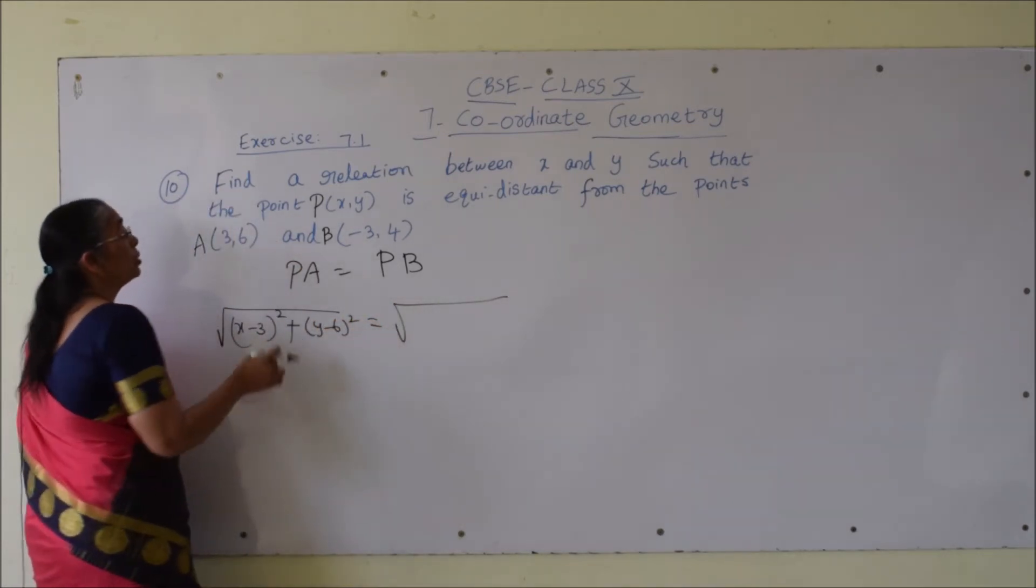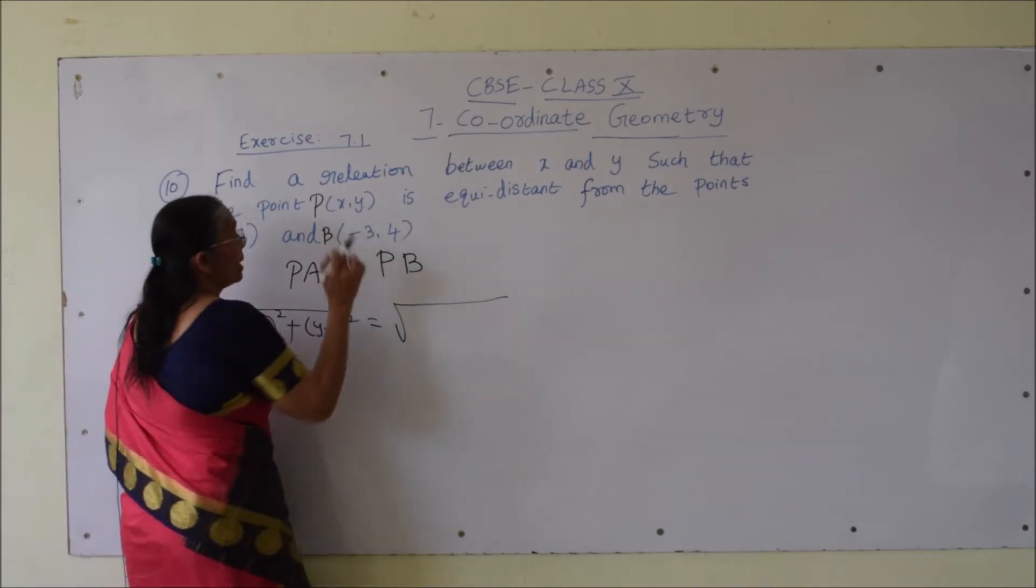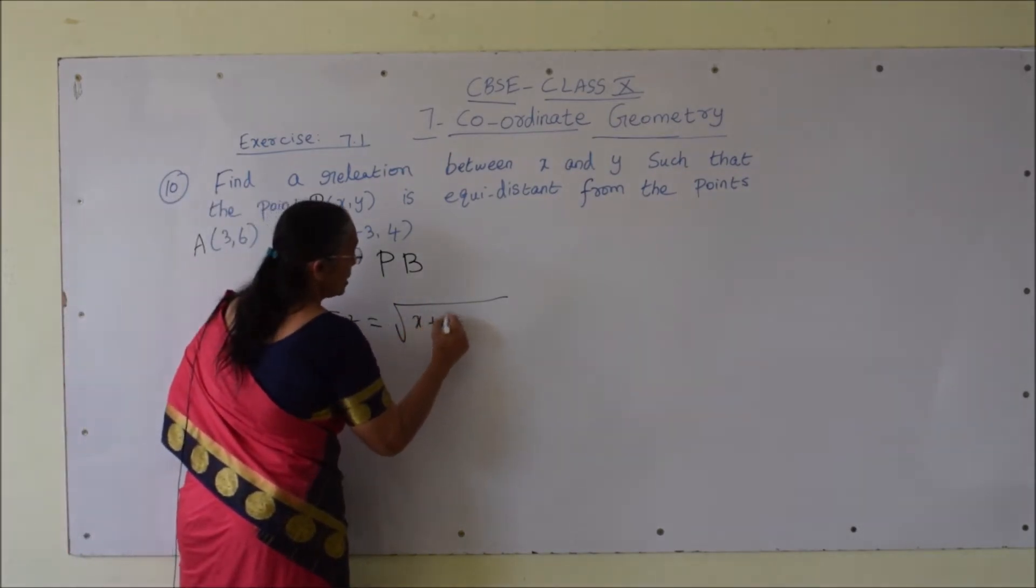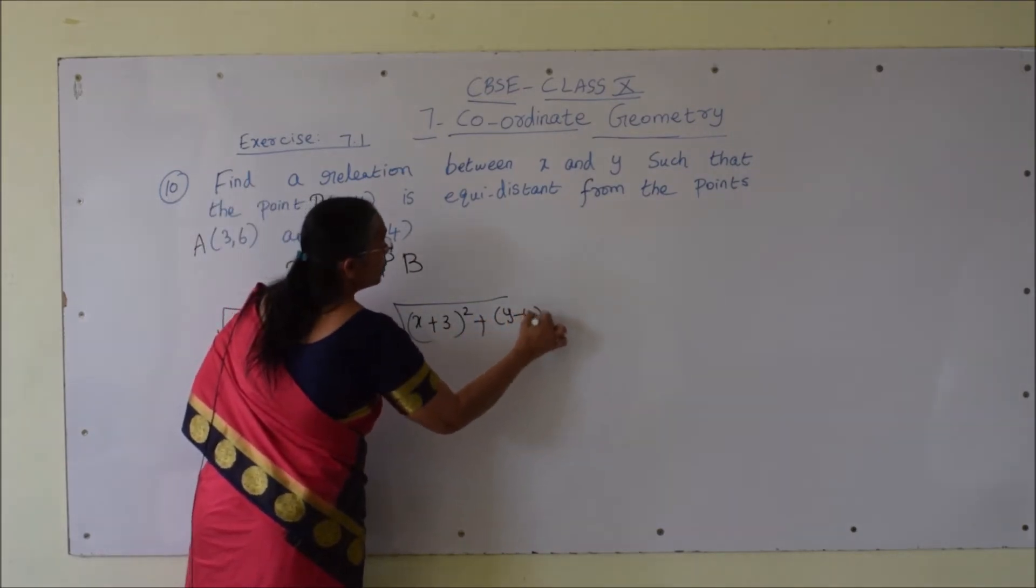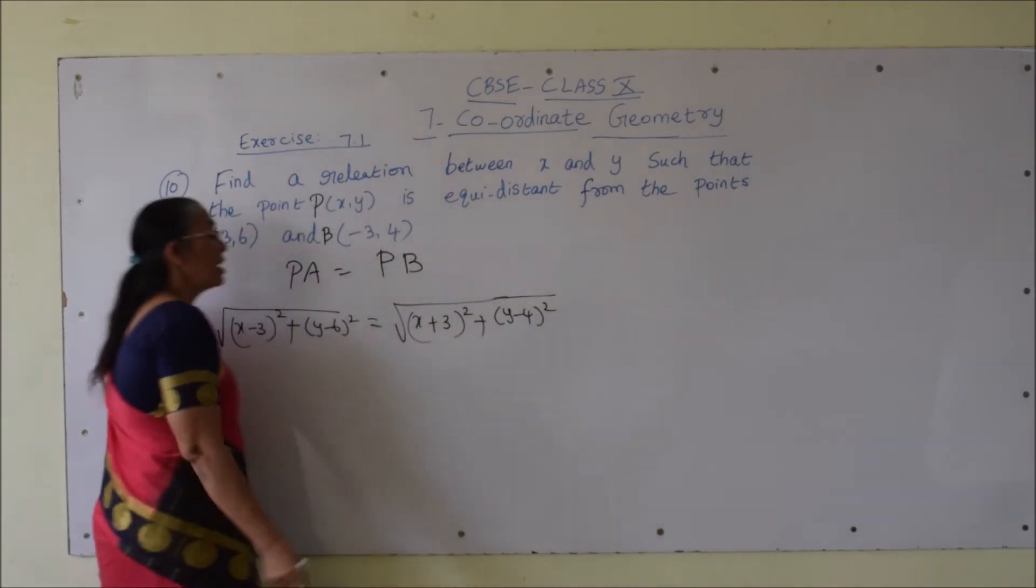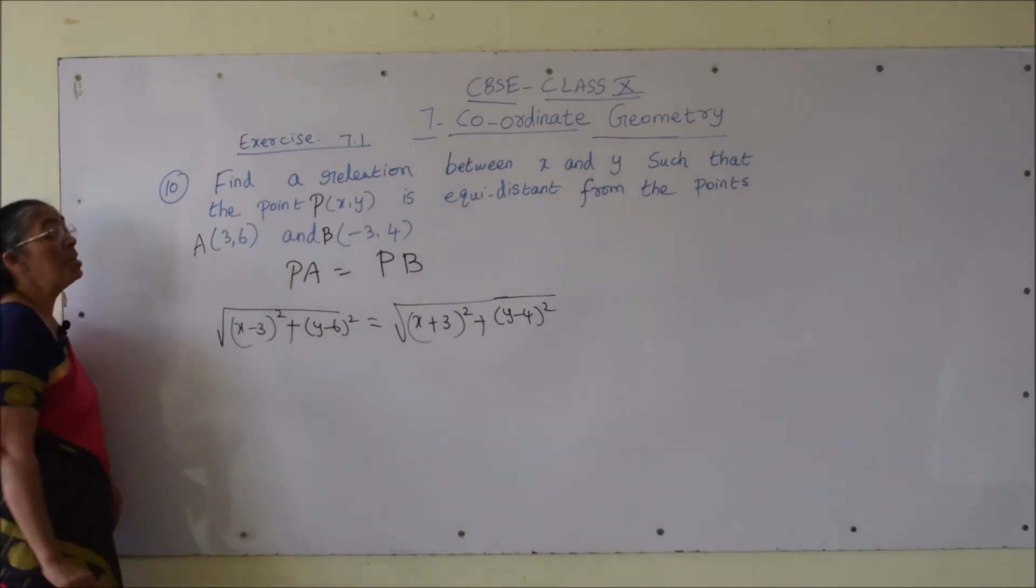PB distance root over x minus of minus 3, (x plus 3) whole square plus (y minus 4) whole square. So our question is we have to find the relation between x and y.